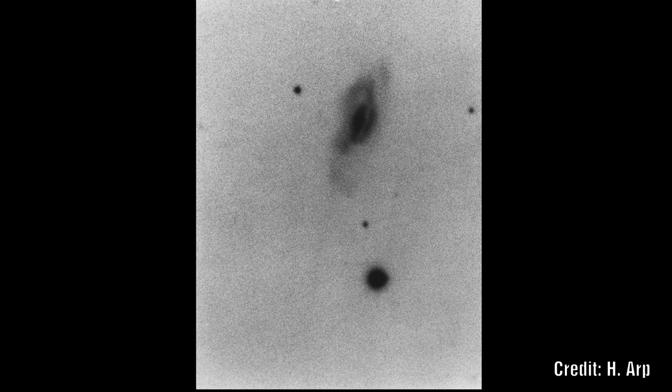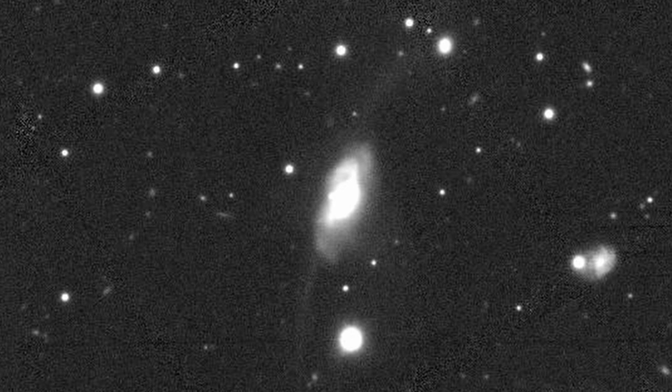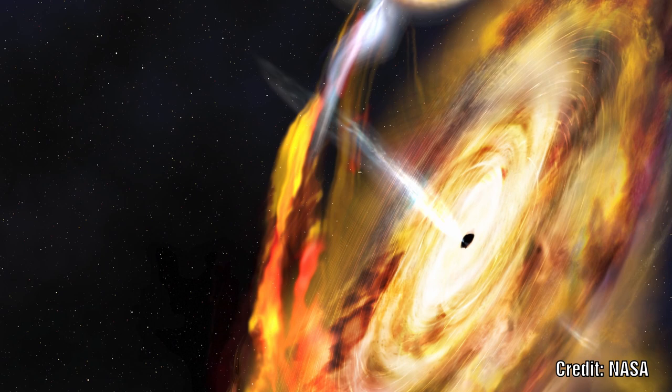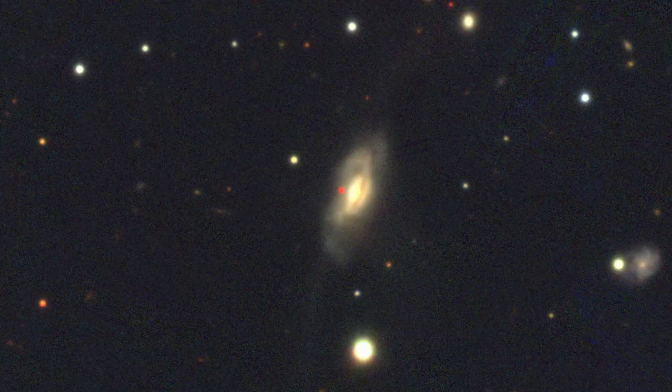Arp 187 is one of the galaxies that Halton Arp catalogued and identified as a peculiar galaxy. This is because it has clear filaments that stretch away along both arms to the north and south of the image. It is considered to be a radio galaxy with what is thought to be an active galactic nucleus. These are thought to eject matter along the axis. This material often glows in radio.